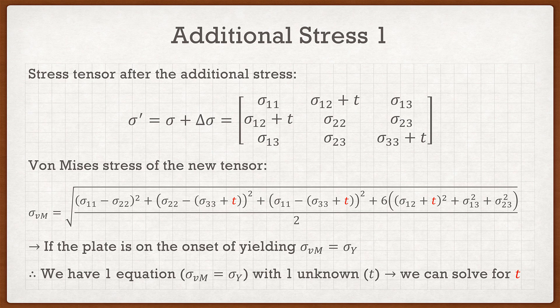Solving for T isn't as easy as it looks since it's a complex equation, so use your calculator or Mathematica. You'll find two values of T — this is why the question specifies T greater than zero. There will be a T greater than zero and a T less than zero, because yielding can be brought about in tension or in compression. Pick the positive value — that's your answer for part c.